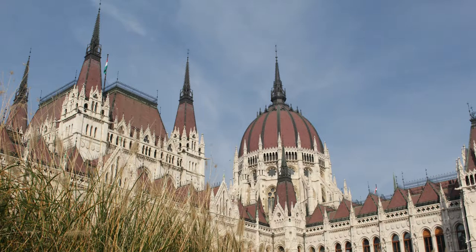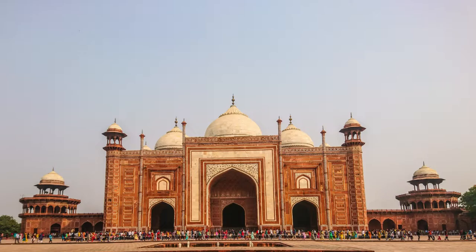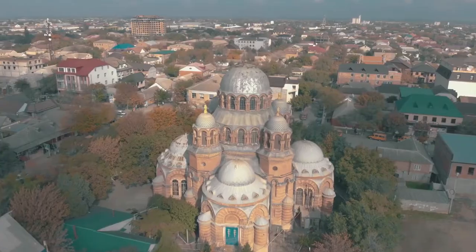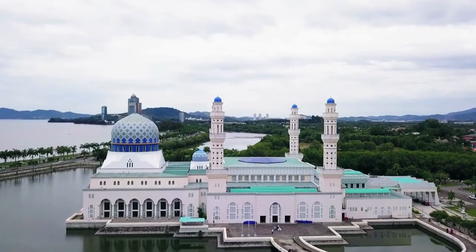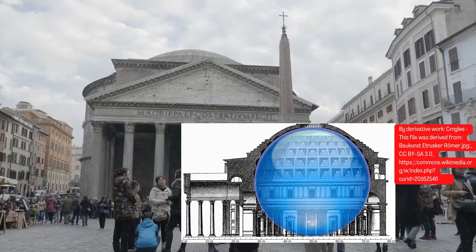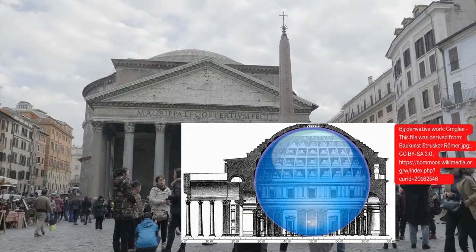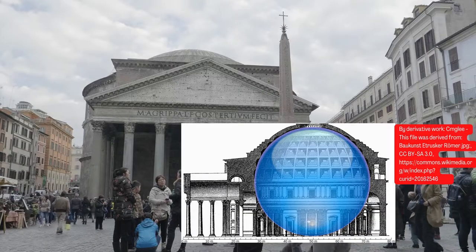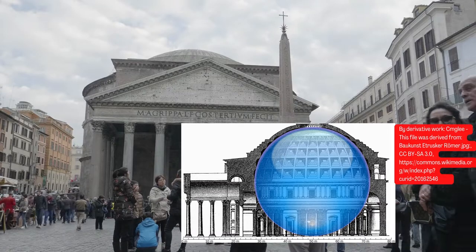People have been building domes for thousands and thousands of years. Domed buildings are everywhere, mostly seen in churches, mosques, and government buildings. Tracing back to history, before the Romans, all buildings in the ancient world were rectangular or square-shaped.